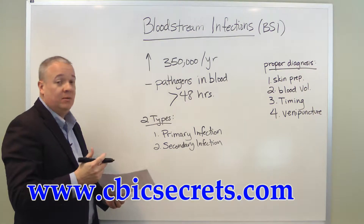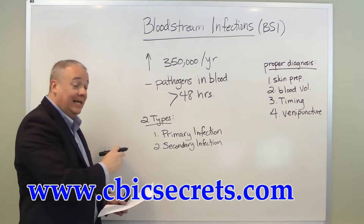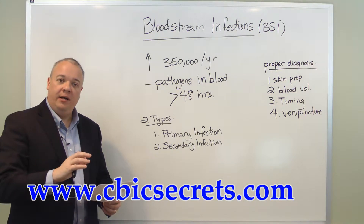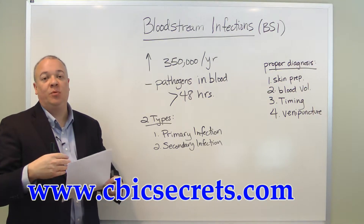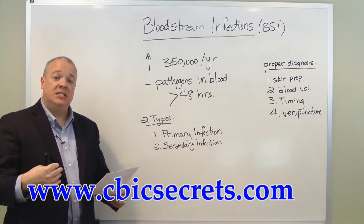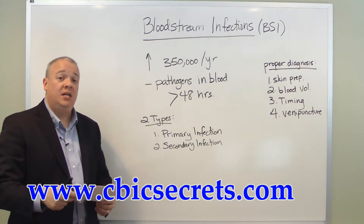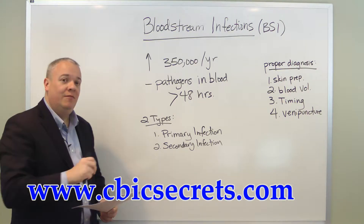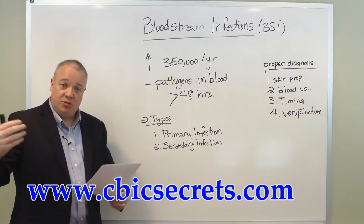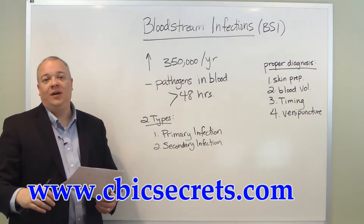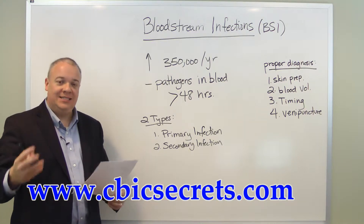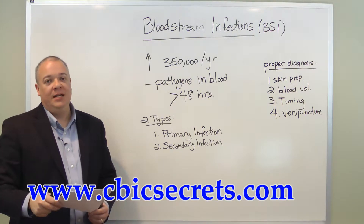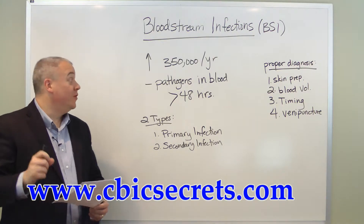The second type is secondary infection, meaning there is infection elsewhere in the body — such as a urinary or wound infection — that has then spread systemically and ended up in the blood. It needs to be determined whether it's a primary infection introduced through an intravascular device, or a secondary infection spread from another part of the body.